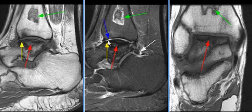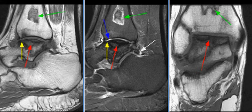A full thickness defect is seen in the cartilage overlying the anterior aspect of the tibial plafond with osseous edema and anterior spurring.